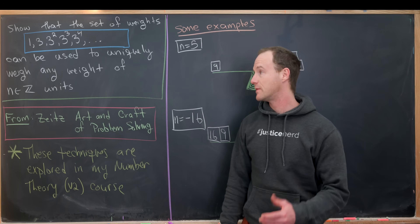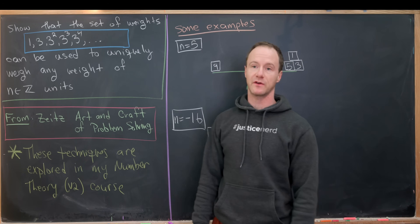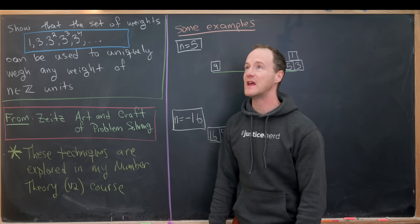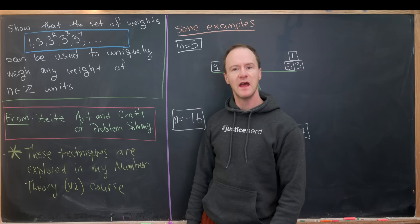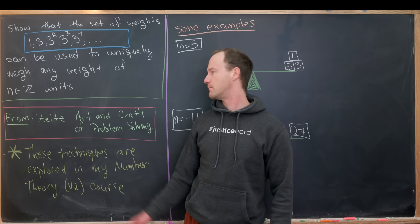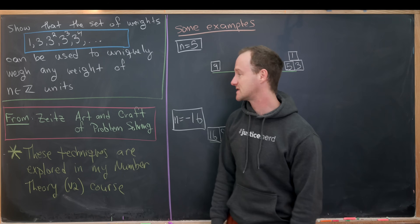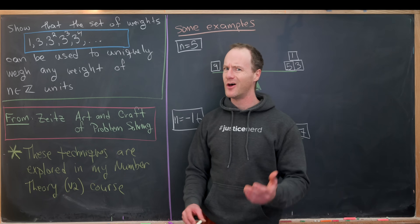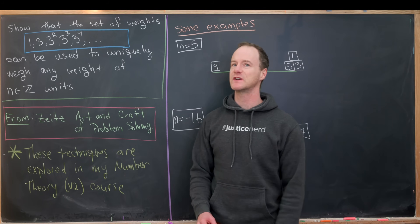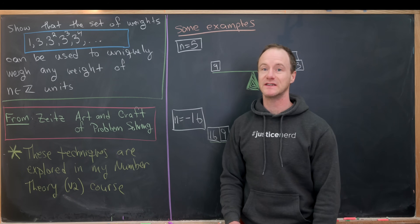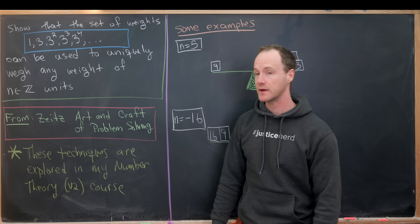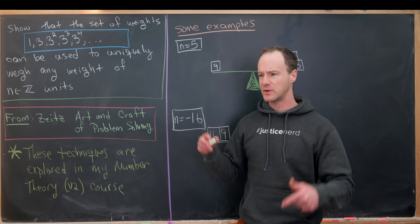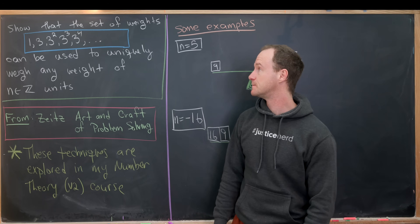Today I've got a nice combinatorial number theory problem that comes from one of my favorite problem-solving books — a book from Paul Zeitz called The Art and Craft of Problem Solving. Although I think this book is pretty hard to get nowadays, I think it's out of print. But maybe if you've got a place to find it, post it in the comments.